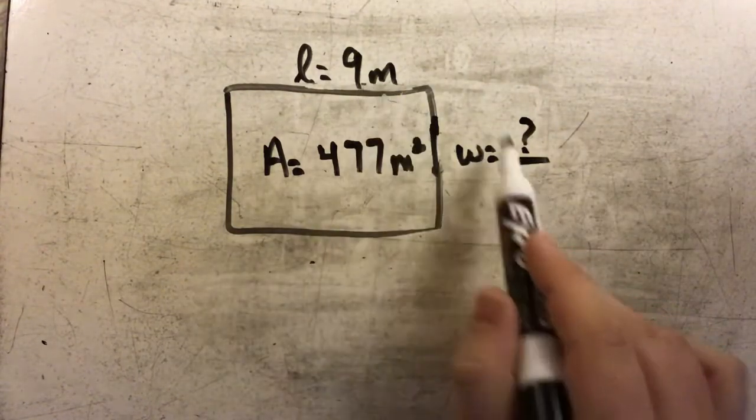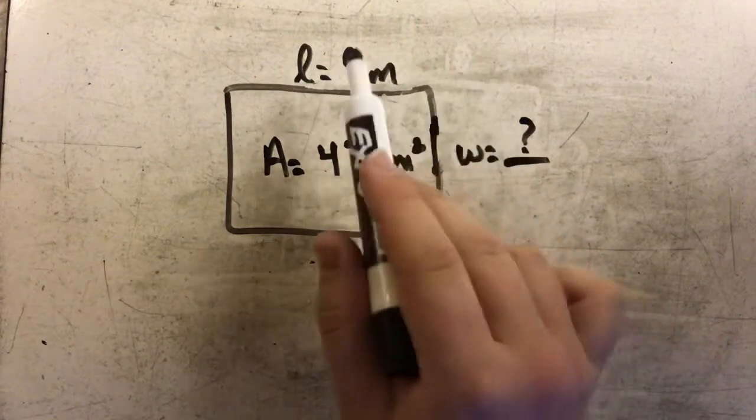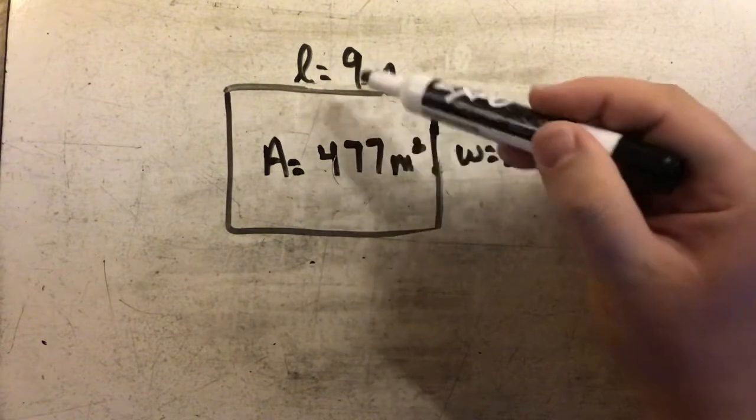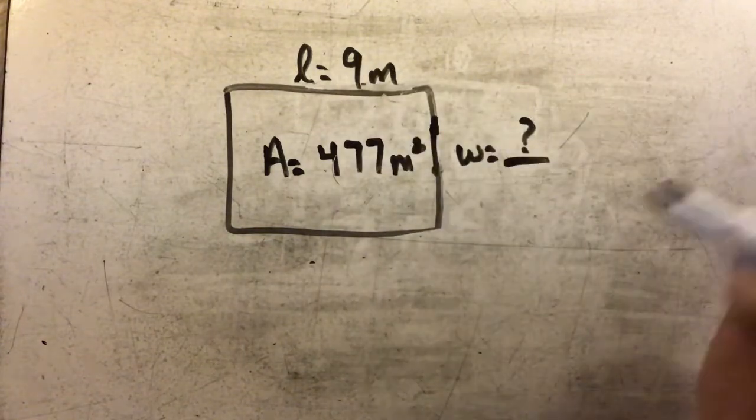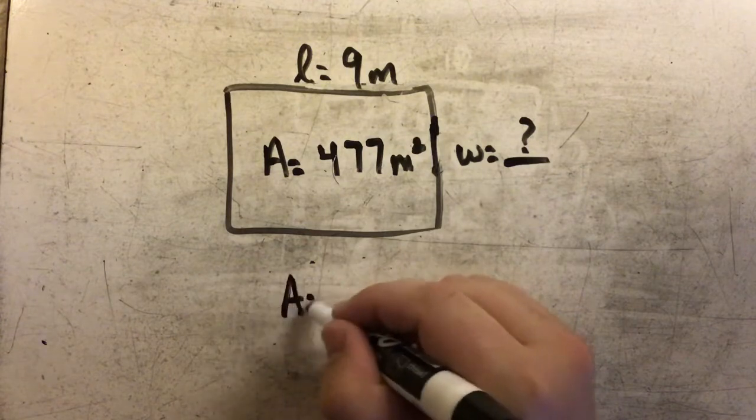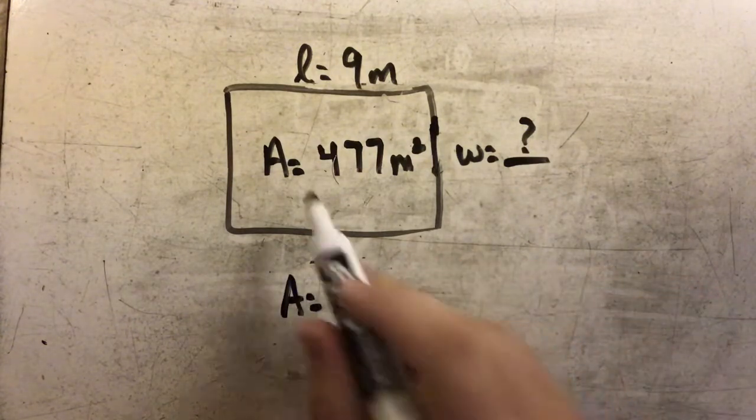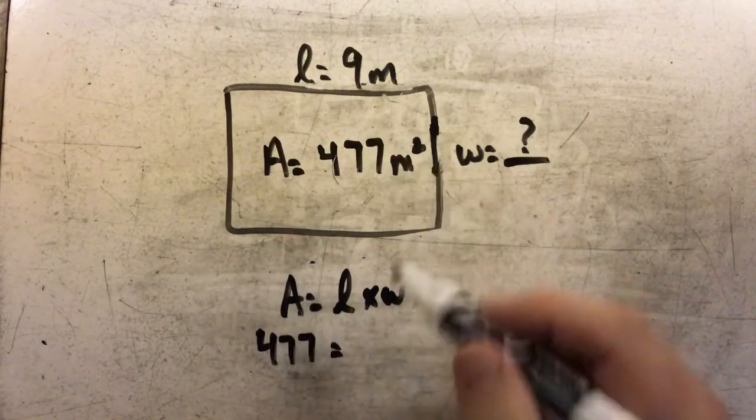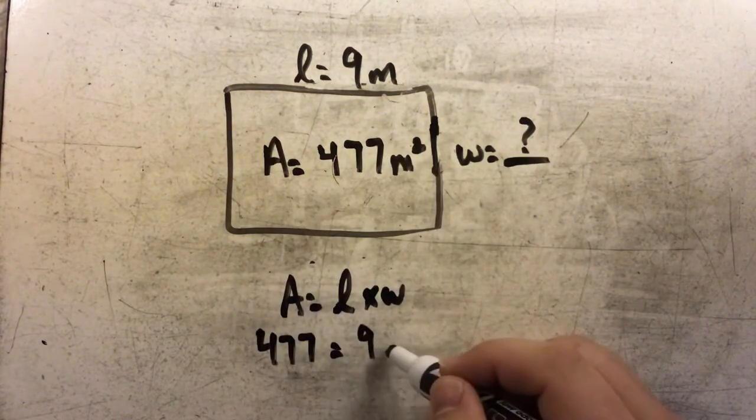If I'm multiplying these two measurements to find my area, I'll simply divide my area by one measurement to find the other. Area equals length times width. In this case, area is 477 square meters, and length is 9 meters.